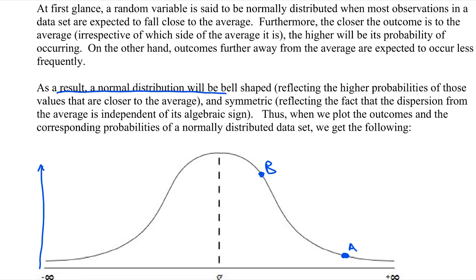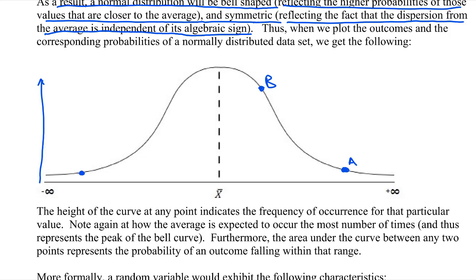As a result, normal distribution will be bell-shaped, reflecting the higher probability of those values that are closer to the average. And it will be symmetric, reflecting the fact that the dispersion from the average is independent of its algebraic sign. And I demonstrated this before too, right ladies and gentlemen? So suppose we're looking at this distance and this distance here. And what that means is that these distances are equal. And so if that's A and that's B, let's call this C. And you can see that both A and B are equally distanced away from the mean. Just they happen to, one happens to be above the mean, one happens to be below the mean. It doesn't matter because they both will have the same frequency. So that's where this symmetry comes in from. Because we're saying it doesn't matter which side of the mean you're at, your probability will be the same.